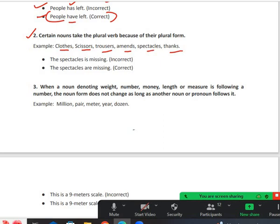I will share an example with you. The spectacles is missing - this is incorrect. Spectacles is plural, so the helping verb 'are' will be considered the correct helping verb for the given sentence. The spectacles are missing is correct. Clear? Yes sir.